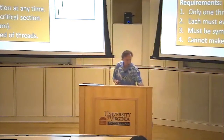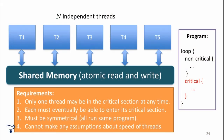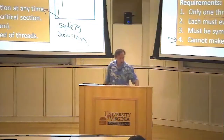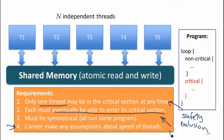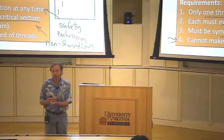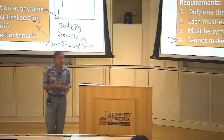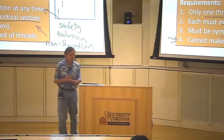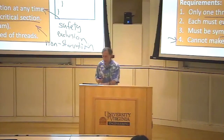These are the requirements, and the assumption is we can't make any assumptions about the speed at which they execute — no limit on the amount of time any one thread spends in its non-critical or critical section. The most important property is safety: that's exclusion — only one thread can be in the critical section. The second property is that threads actually can make progress; eventually each thread gets to enter, so this is non-starvation. We also have the constraint that they're all going to be running the same program. That simplifies the problem and seems like something we want for fairness.